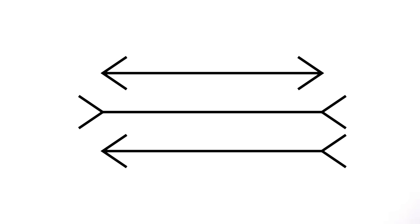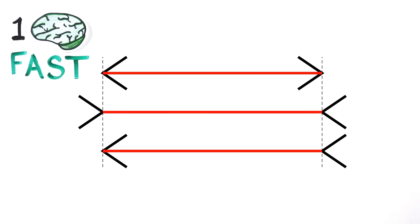Take these lines for example. It's clear that they're different lengths, but if you measure them, they're actually the exact same length. Even now that you know, System 1, or your fast thinking, can't stop seeing the illusion because it acts automatically.